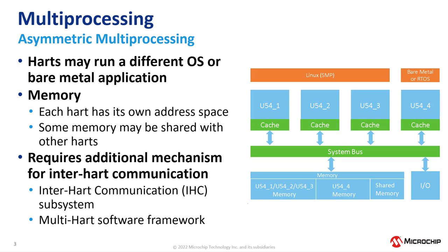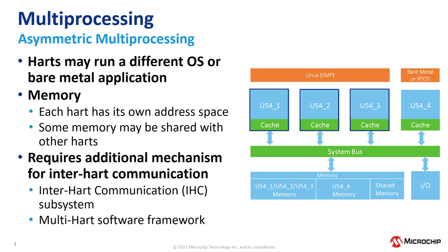In AMP, a core or group of cores running an independent instance of an operating system is called a software context. In the image on the right, we have an example of an AMP architecture with two software contexts. The first context is running Linux in SMP mode from cores 1, 2, and 3. The second context is running a bare-metal or a real-time operating system on core 4.